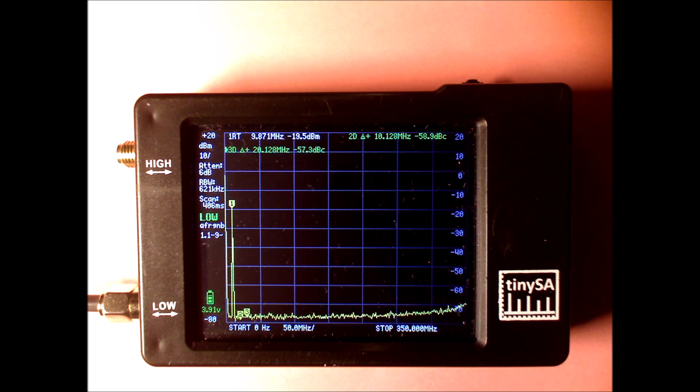Except that I've added two delta markers at 20 and 30 MHz so we can measure the level of the harmonics if they appear. What you see here is that the measured level is at minus 19.5 dBm, which is OK.